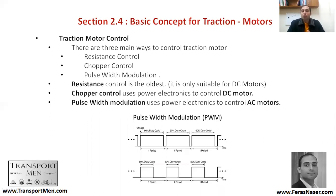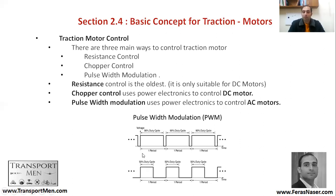There are three main ways to control traction motors: resistance control, which is a very old method; chopper control; and pulse width modulation. Resistance control is the oldest and is only suitable for DC motors. Chopper control uses power electronics to control DC motors, and pulse width modulation uses power electronics to control AC motors.